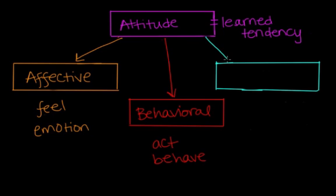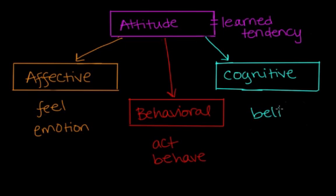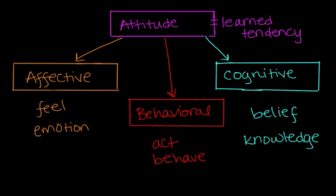The last component is called the cognitive component. In the cognitive component, we form thoughts, we form beliefs, or we have some sort of knowledge about a subject or an object or a topic that's going to influence and shape our attitude. An example here is saying I believe spiders are dangerous — we have a belief that they are dangerous, and that's going to form our attitude. We call these three components the ABC model of attitude.